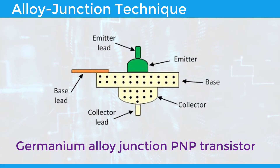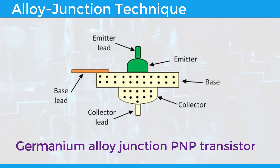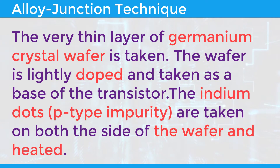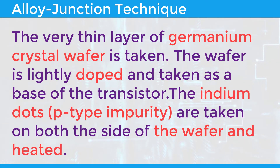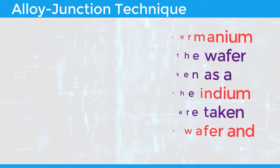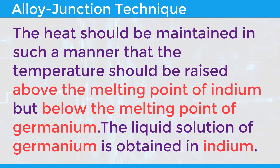The fabrication technique of making a germanium alloy junction PNP transistor is shown here. A very thin layer of germanium crystal wafer is taken. The wafer is lightly doped and taken as the base of the transistor. Indium dots, a P-type impurity, are placed on both sides of the wafer and heated. The heat is maintained such that the temperature is raised above the melting point of indium but below the melting point of germanium.